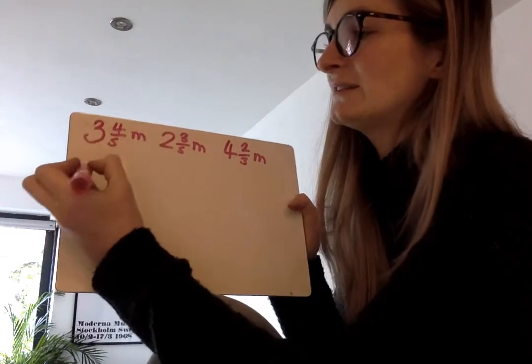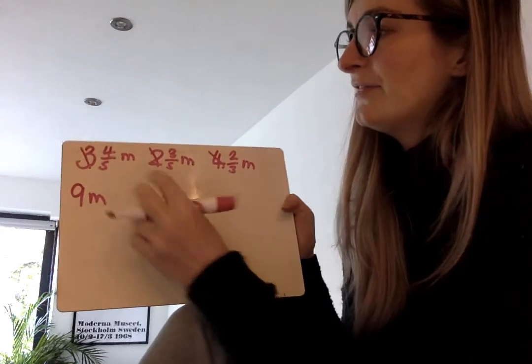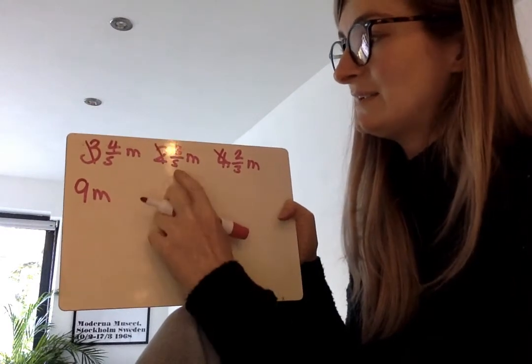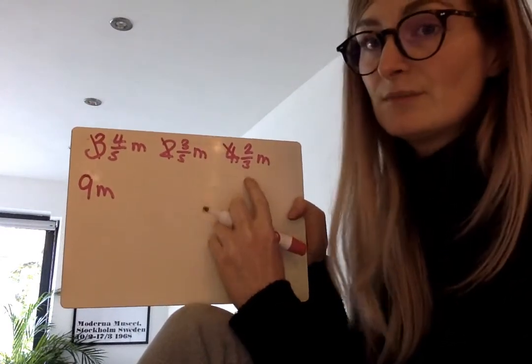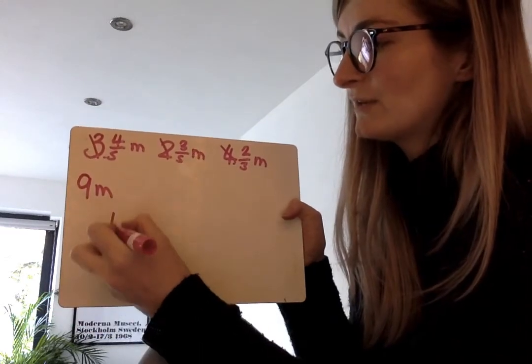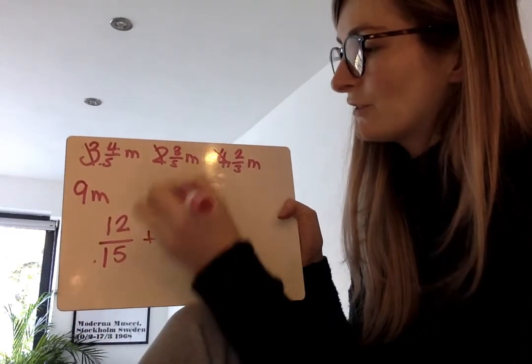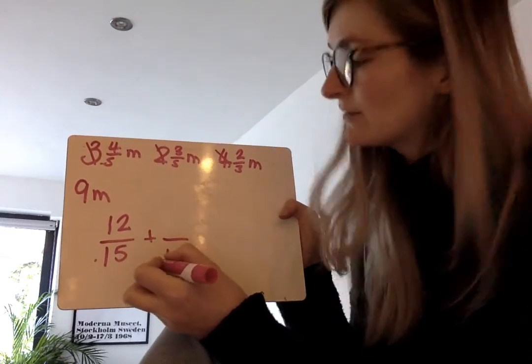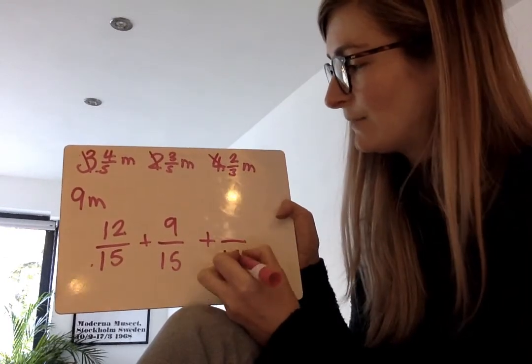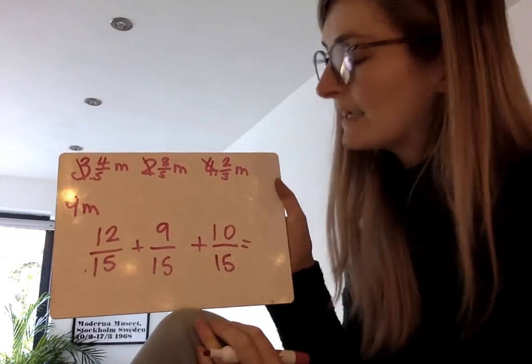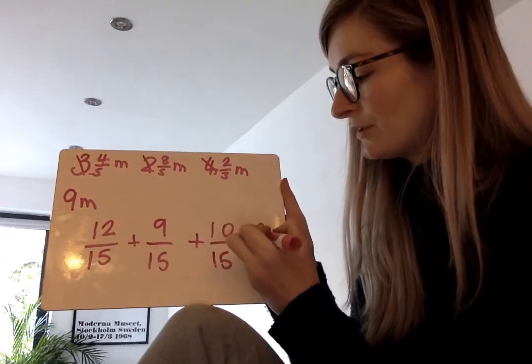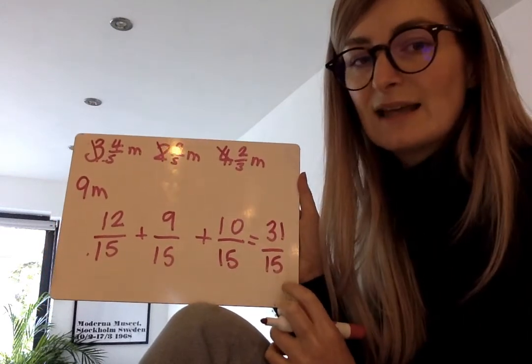So 3 add 2 is 5, add 4 is 9 metres. That's my wholes done. And then 4 fifths, 3 fifths and 2 thirds. I'm going to find the lowest common denominator, which is 15. I know that because 5 times 3 is 15. So 4 fifths into 15ths is times 3, so 4 times 3 is 12. Add 3 fifths, which is times 3, 3 times 3 is 9. And then 2 thirds into 15ths is times 5, 2 times 5 is 10. I can now add these fractions. 12 add 10 is 22 plus 9 is 31 fifteenths. This is an improper fraction.